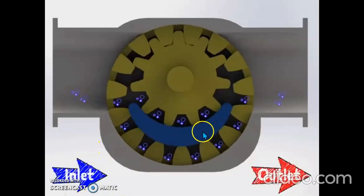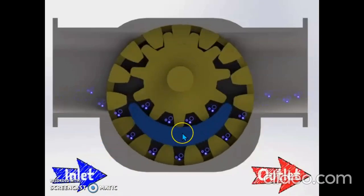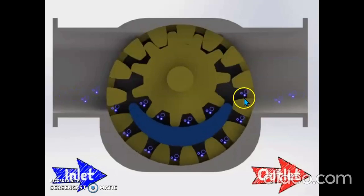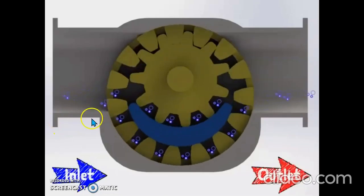See the purpose of the crescent seal. It prevents the flow of liquid from discharge port to inlet port.